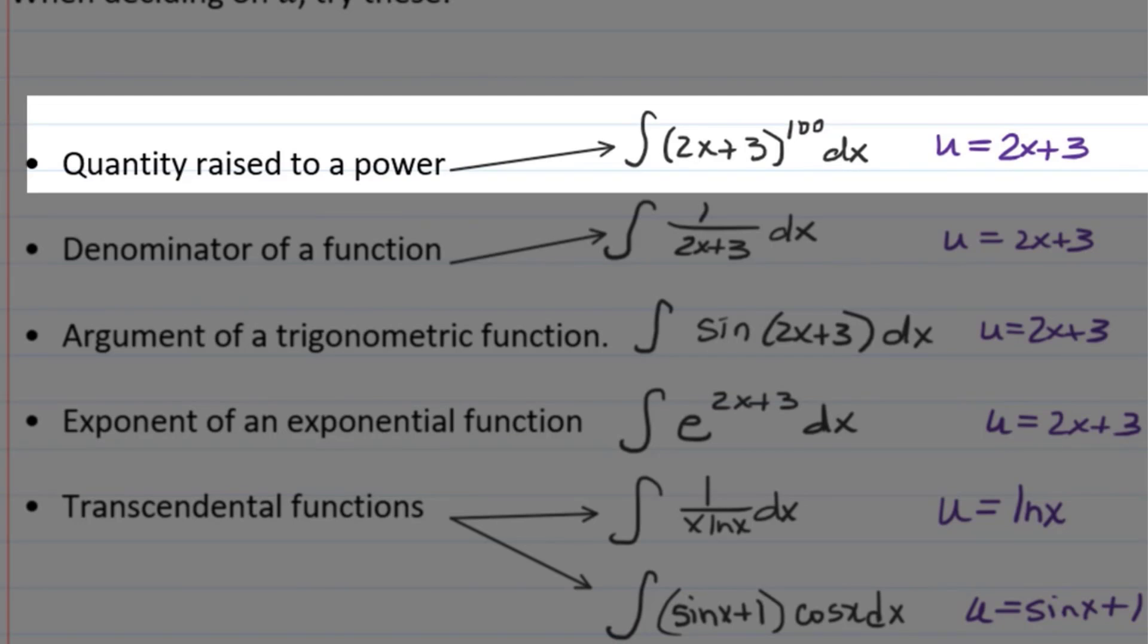If you have a quantity raised to a power, then you can let U be that quantity. So in the first example, I have 2x plus 3 to the 100th. We could let U be the 2x plus 3.